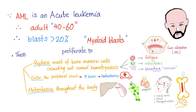The blasts enter the peripheral blood leading to leukostasis and metastasis through the body. You end up with hepatosplenomegaly, painless generalized lymphadenopathy, testicular enlargement, and cranial abnormalities such as headache, cranial nerve abnormalities, retinal abnormalities, and meningeal irritation. Also bone pain, skin abnormalities, and in AML subtype M5 there is gum infiltration or gingival hyperplasia — high yield.